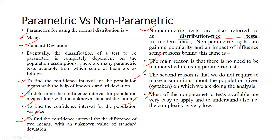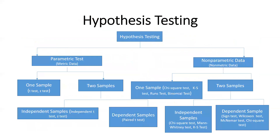For non-parametric tests — which are distribution-free — one main reason they are popular is that there is no need to meet strict assumptions as required with parametric tests. The second reason is that we do not require assumptions about the population from which we are doing the analysis. Also, most non-parametric tests available are very easy to apply and to understand, meaning the complexity is very low.